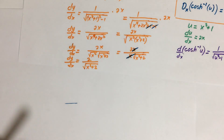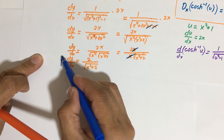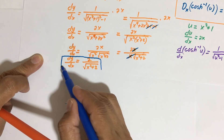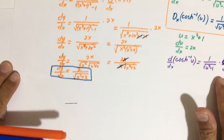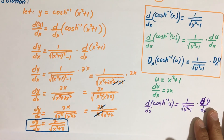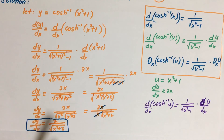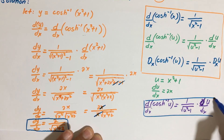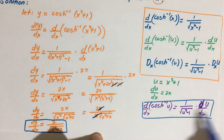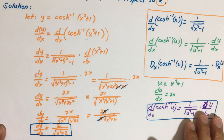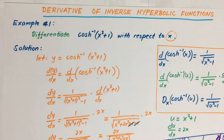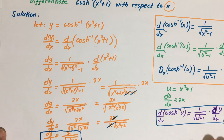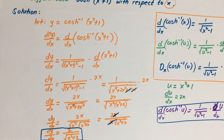So that's our final answer: dy/dx equals 2 divided by the square root of x squared plus 2. Hope you were able to follow the solution. Thank you very much, and I hope to see you again in the next video with another example. Thank you, bye.